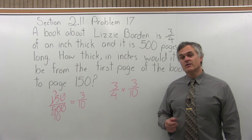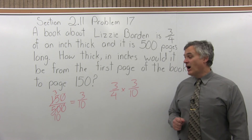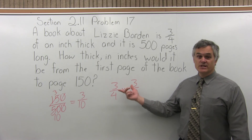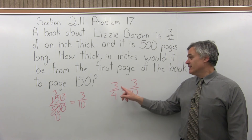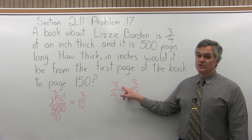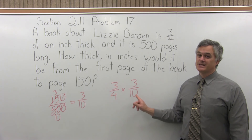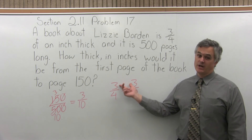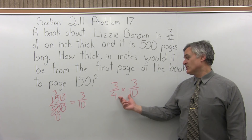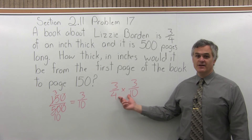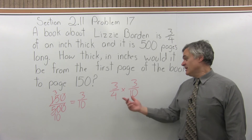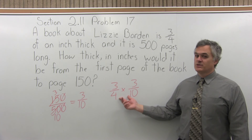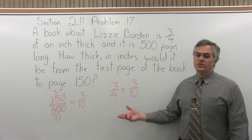Be careful with this one — it looks like it can pre-reduce, but it cannot. We have a 3 in both fractions, but in order to pre-reduce, one has to be in a numerator and one in a denominator. Here they're both in the numerator, so they will not pre-reduce. Same thing with the 4 and the 10 — they both divide evenly by 2, but they're both in the denominator, so we can't pre-reduce them.